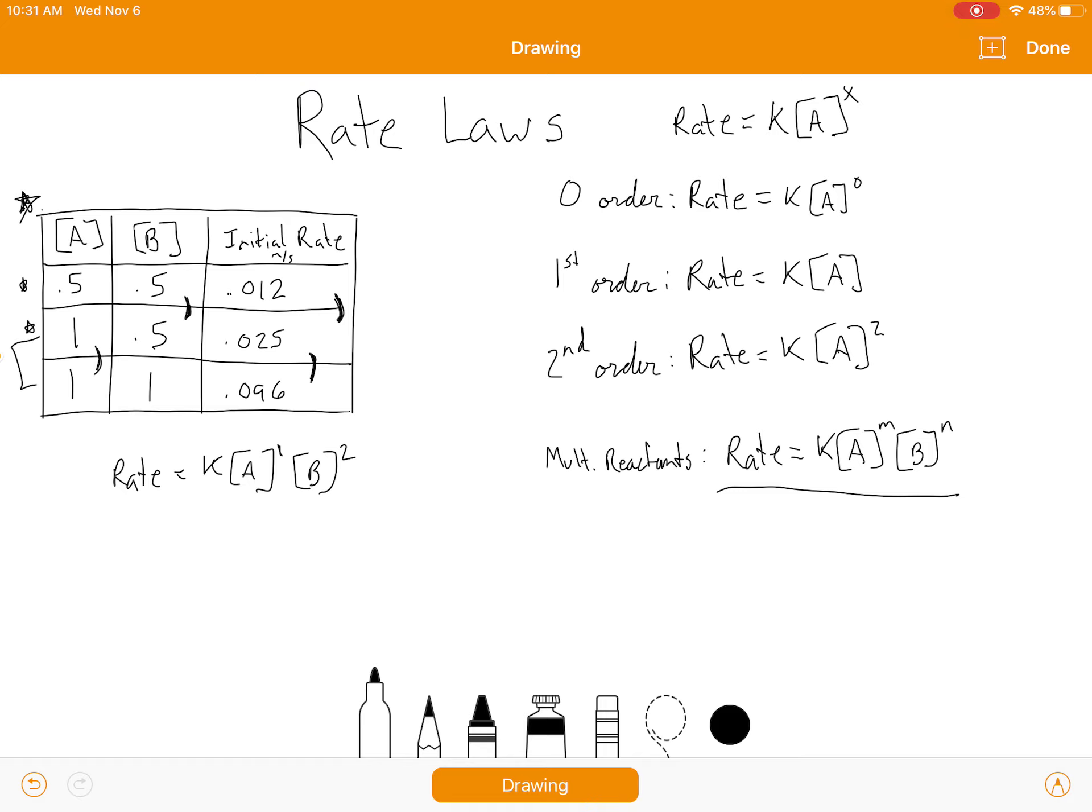Now, typically you also will need to find the rate constant, which is K. So all you have to do in that case is pick a point. Sometimes they'll actually give a fourth point. Since I just kind of like made up fake data, I didn't actually do a fake point. So, what you would do is just pick any of the points. It doesn't really matter if you want to be really accurate, do it for all of them and then average them and just plug it in.